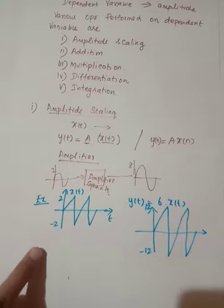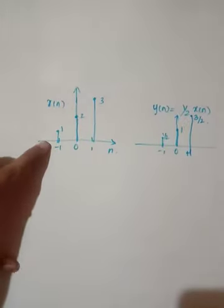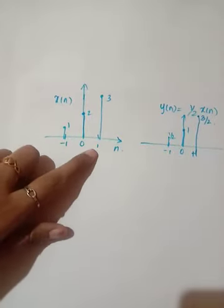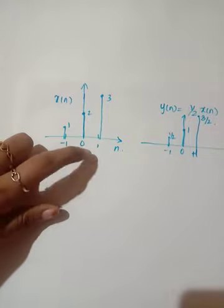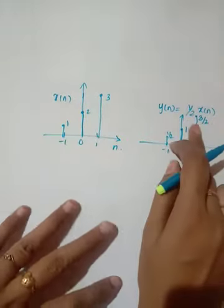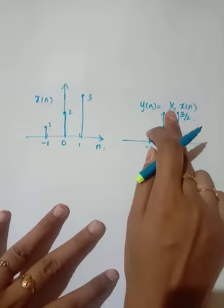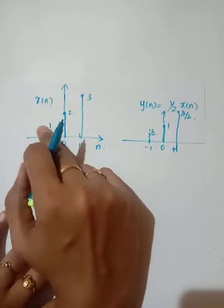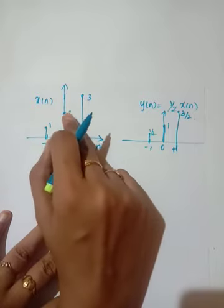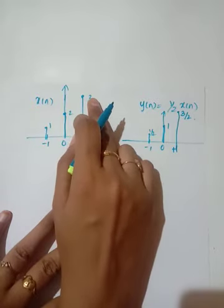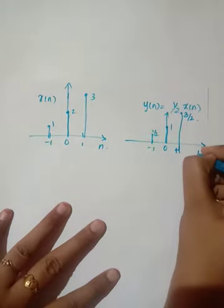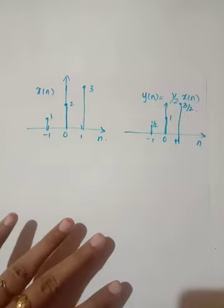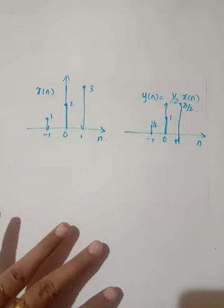Hope you understand this concept. Now consider this discrete time signal x(n). It has only 3 sequences at indices minus 1, 0, and 1: the value at minus 1 is 1, at 0 is 2, and at 1 is 3. I am going to perform amplitude scaling by a factor of 1/2 — just multiplying each amplitude by 1/2 — giving 1/2, 1, and 3/2. This is a simple example of amplitude scaling.